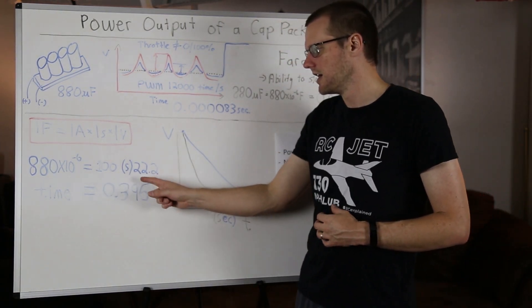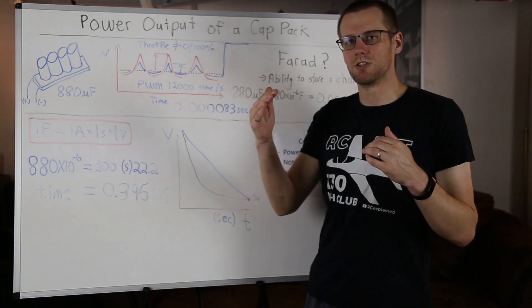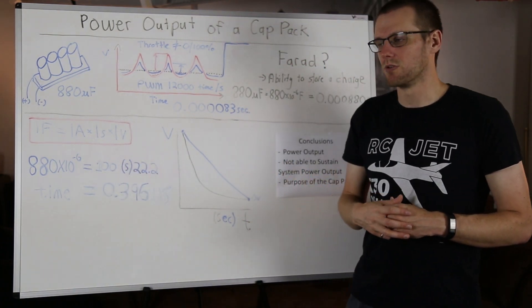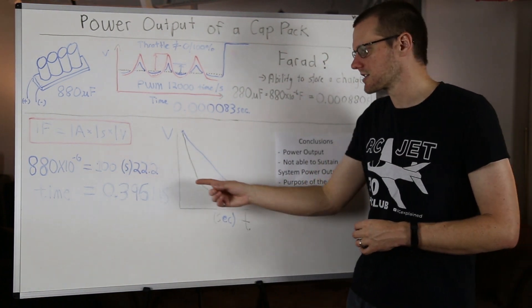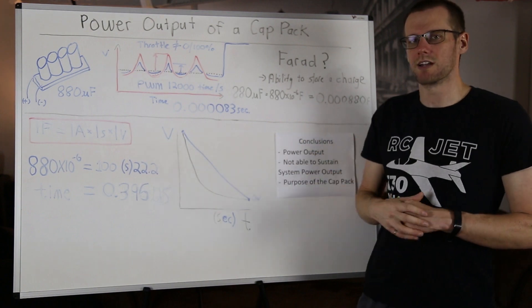What this tells us is as soon as we start drawing this current for even a small fraction of the time that we've calculated here, this voltage is actually going to drop. If the voltage is dropping, we're not going to really have a usable 100 amps at 22.2 volts, even for this moment of time. The usable time period is actually going to be less than that. That is something that you can calculate. We're not going to go through that in this example.